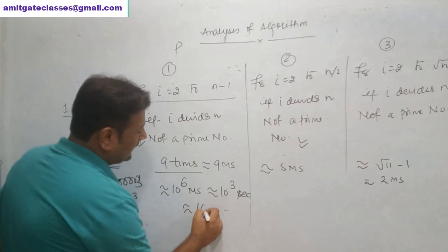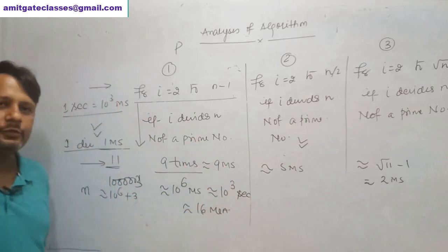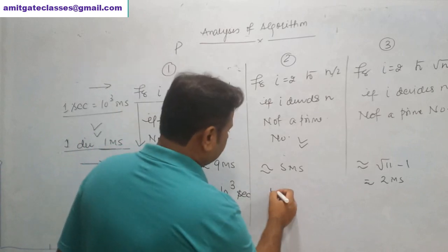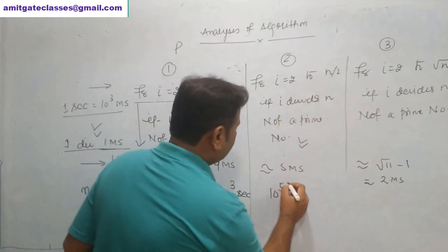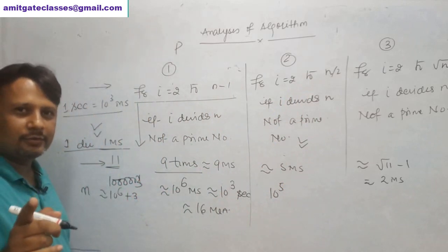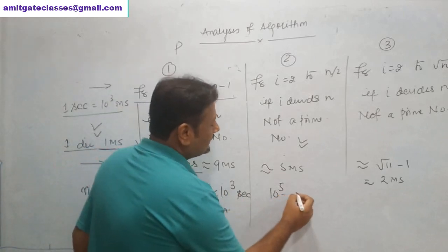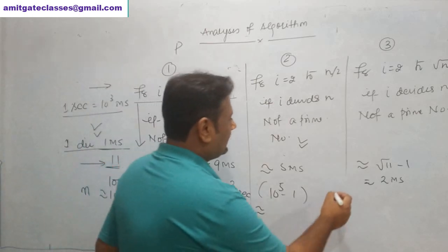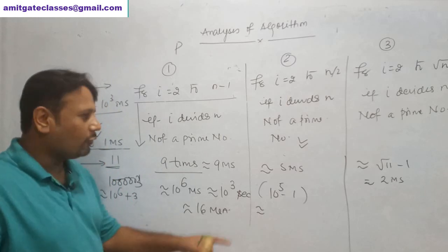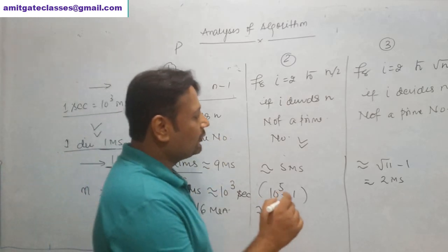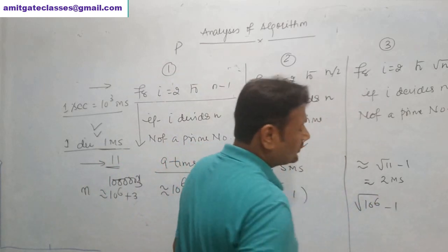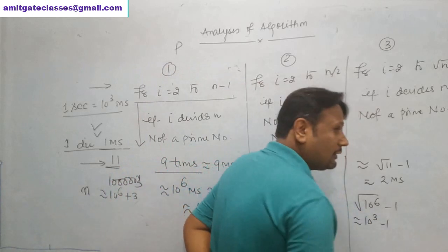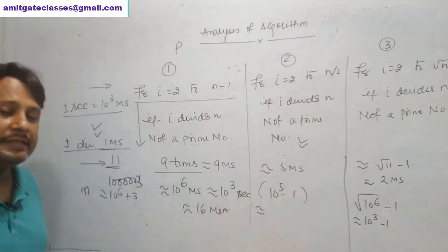Solution 2 runs up to n/2, so approximately 10^5 milliseconds — still several minutes. But solution 3 runs up to root(10^6) = 10^3 milliseconds, which equals one second. So for the number 10^6 + 3: solution 1 takes about 16 minutes, solution 2 takes several minutes, and solution 3 takes just one second.